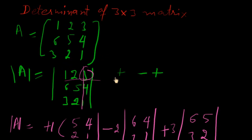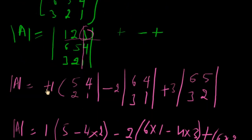In first row, we have cofactors plus, minus, plus. We should write here plus, minus, plus.